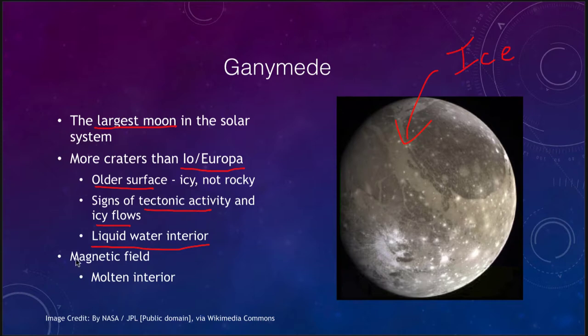Also interestingly, Ganymede has a magnetic field, which means it must have something molten in the interior generating that field. On Earth that is the liquid metal core; on other objects like Uranus and Neptune it may be something in the slushy mantle. So something metallic or icy that is generating a magnetic field must be present on Ganymede as well.